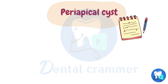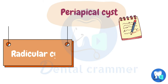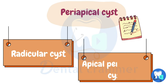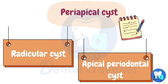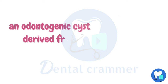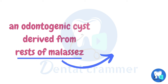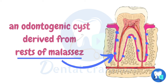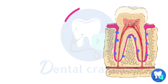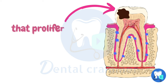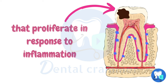Periapical cyst is also known as radicular cyst or apical periodontal cyst. It is an odontogenic cyst which is derived from the rests of molasses. Rests of molasses are cells which are normally present in periodontium and are derivatives of Hardwick's epithelial root sheet. These cells proliferate in response to inflammation of pulp.